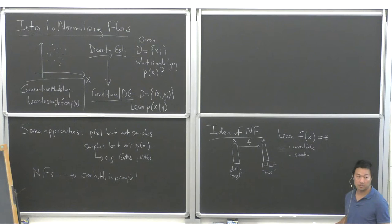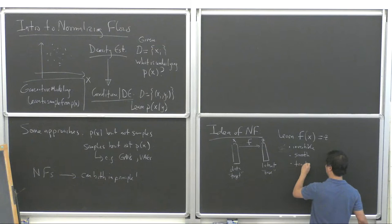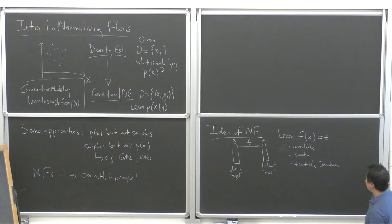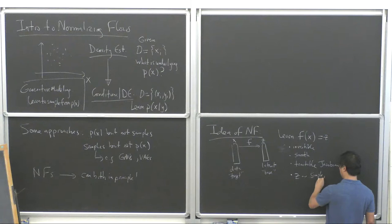We want to learn a map F of X equals Z, where F is invertible, more or less smooth — we can make it piecewise smooth — basically differentiable, invertible, and we want a tractable Jacobian. Most importantly, we want it to map to a latent space where Z, the base distribution, follows a simple specified distribution.